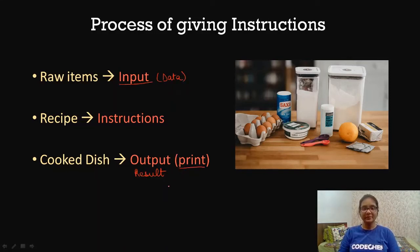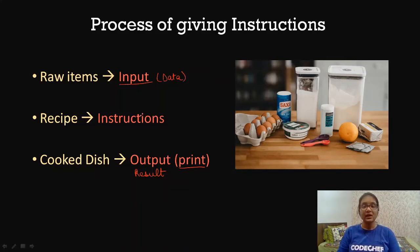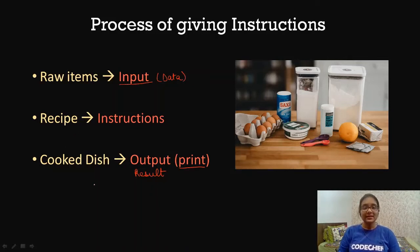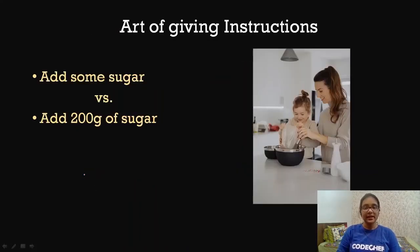With output, there is also a print step, because in order to view the result we need to print it on a computer — but we will see that later when we start to code. For now, we know that we require data, based on which we give instructions, and then we get the desired result. All of this process is carried out using a particular language. Knowing a language does not ensure that whatever instructions we are giving will be accurate and proper.